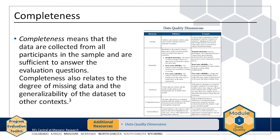Completeness means that the data are collected from all participants in the sample and are sufficient to answer the evaluation questions. Completeness also relates to the degree of missing data, and the generalizability of the data set to other schools, districts, or state education agencies that may want to implement the program. In the AMP example, the evaluation team wants to analyze responses from a survey of math tutors, but less than 85 percent of the tutors responded to a particular question — as a result, the team might worry that the data are incomplete. For more information on missing data and generalizability, review Module 3, Evaluation Design, and Module 4, Evaluation Samples.